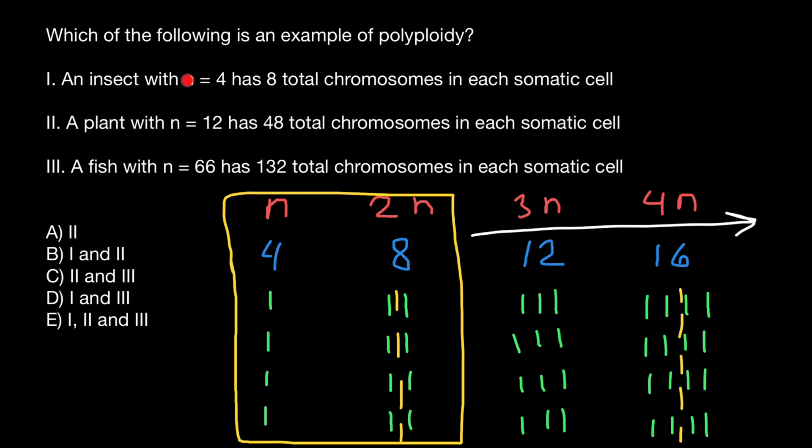Everything above 2n is going to be considered as polyploid. So as you see, the first variant when n is equal 4 and diploid equal 8 would be just normal ploidy and not polyploid. So let's check the second variant.